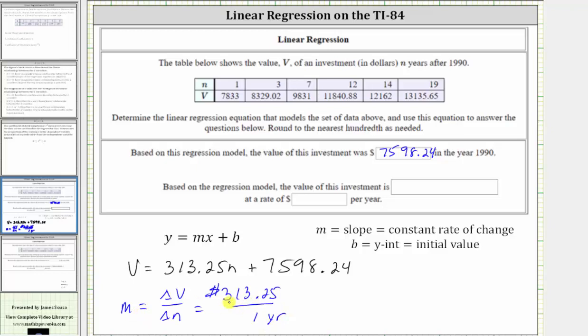So because the slope is positive, this indicates the investment is increasing at a rate of $313.25 per year, which is the information we need. Based on the regression model, the value of this investment is increasing because the slope is positive at a rate of $313.25 per year. I hope you found this helpful.